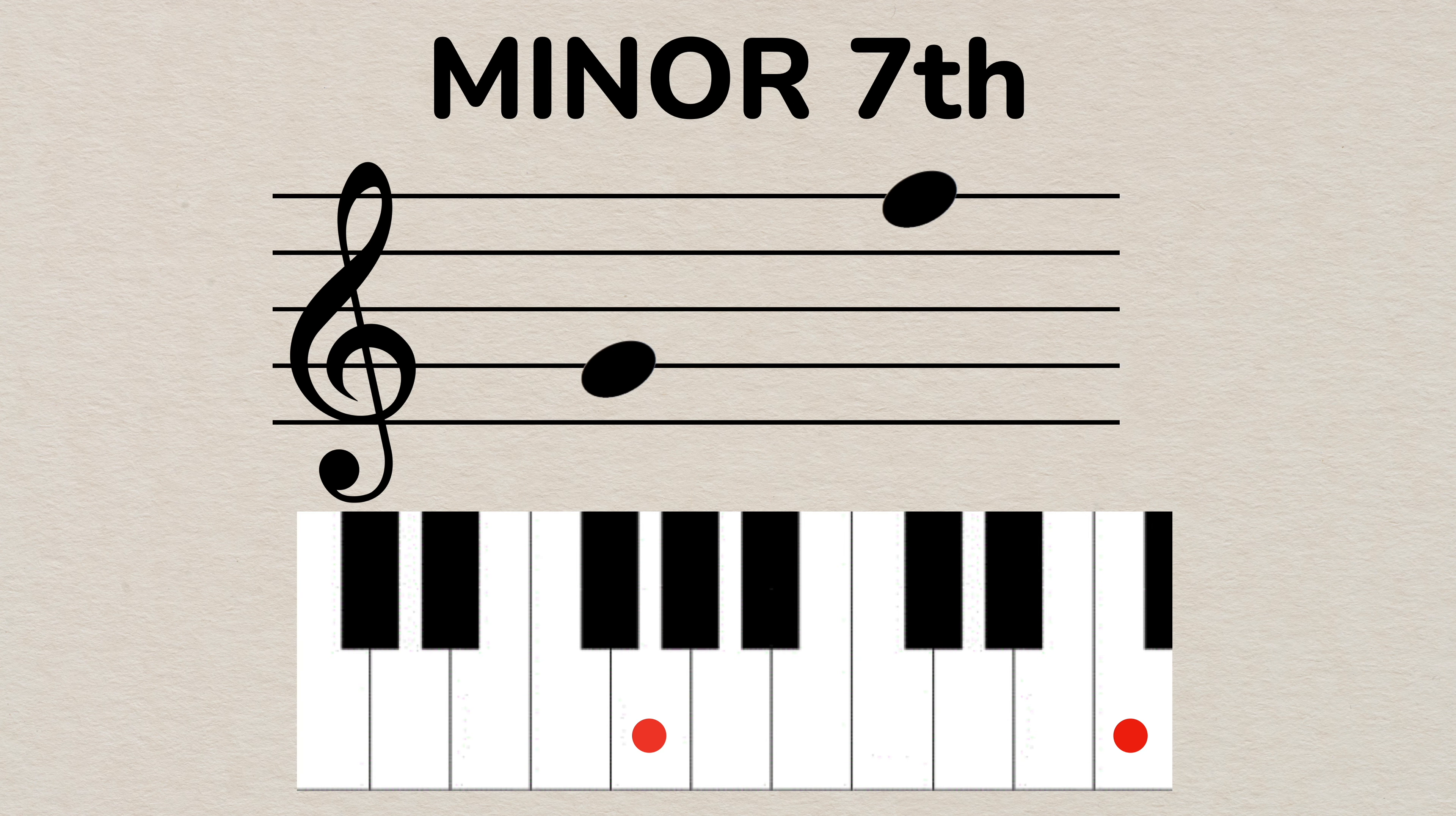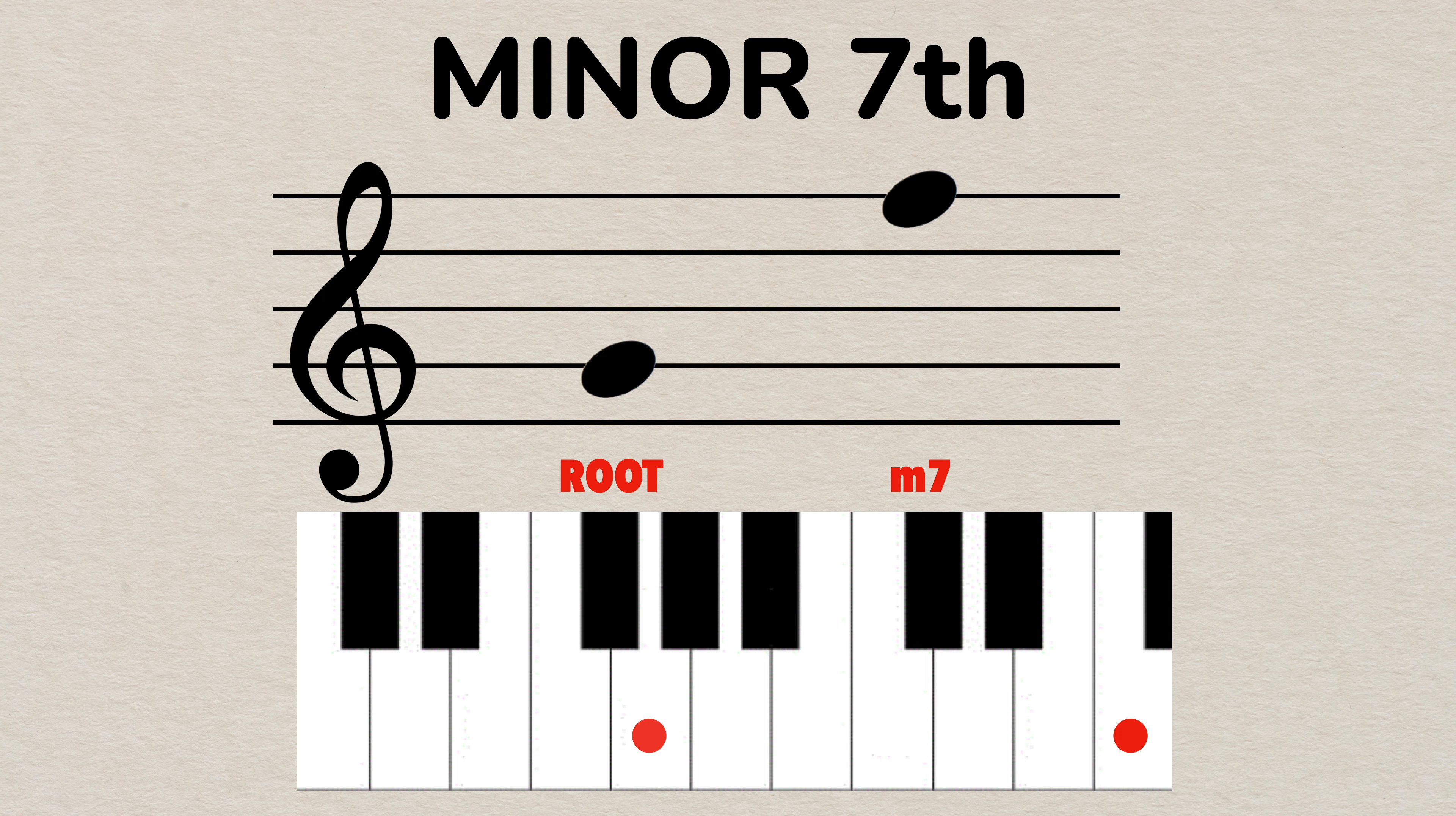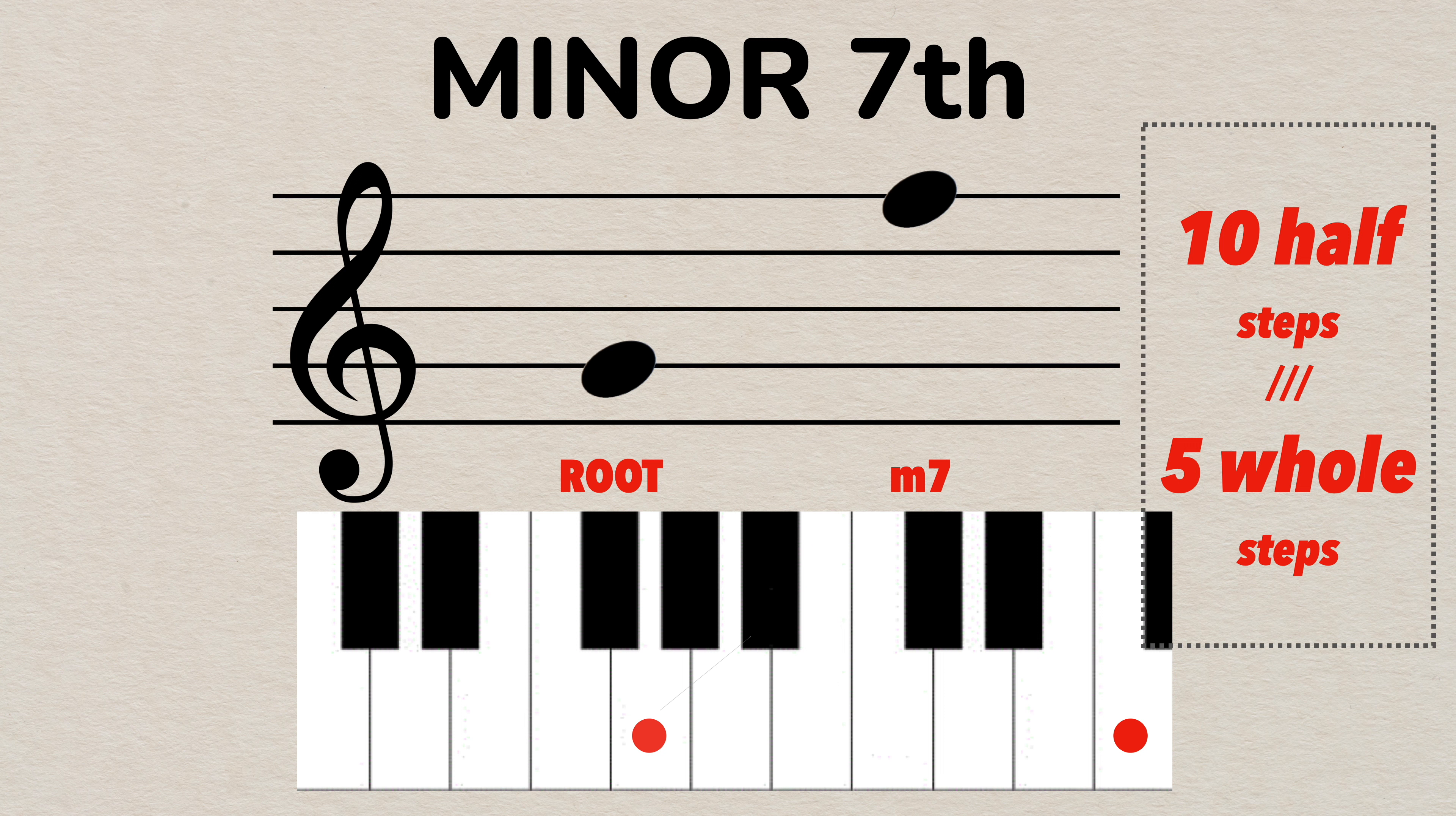The largest simple minor interval is a minor seventh. If the root note is G, the minor seventh interval note above would be F which is exactly ten half steps or five whole steps above G. Any interval that is seven scale degrees apart and has this distance is called minor seventh. Here's what it sounds like.